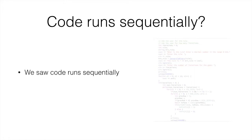For now, we've said that code runs sequentially. This means it starts at the beginning, and it gets to the end, and then when that happens, the program finishes. But, of course, this is not actually true, because then your programs would have to be really large to actually do something useful.